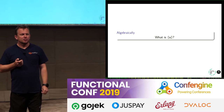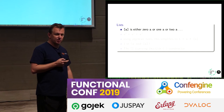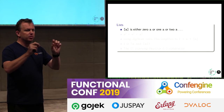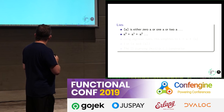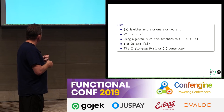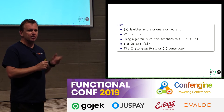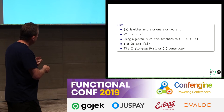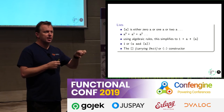What is a list of A algebraically? It's either zero A's, one A, A times A, etc. — it's this infinite series. And we also know it simplifies to 1 over (1 minus A). We can see that this is nil or cons: the empty list — 1 — plus cons, which is the head times the tail.